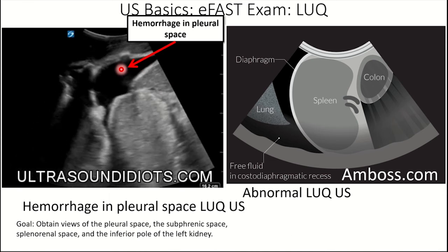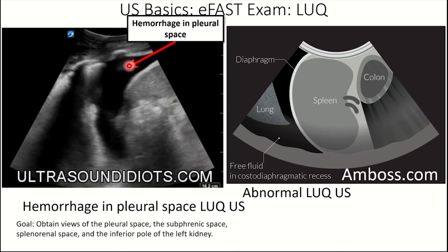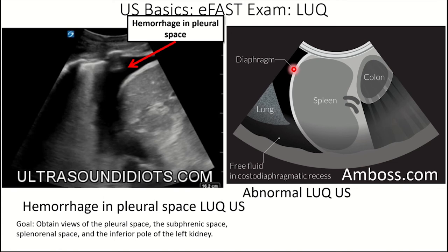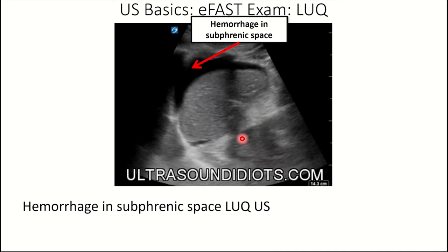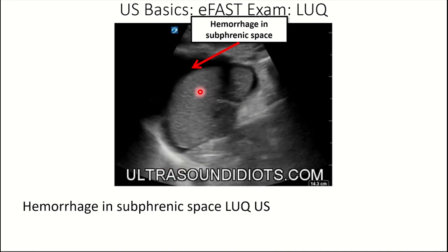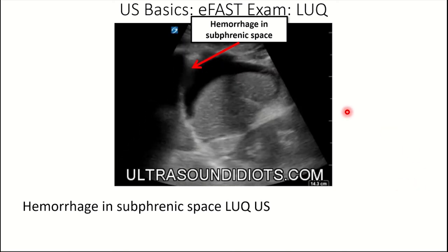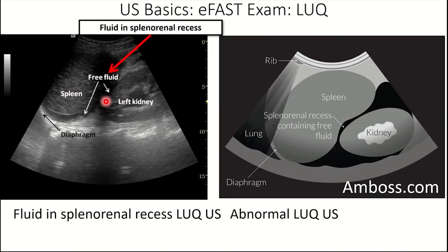Here's hemorrhage in the pleural space on the left side — the lung is waving, we see the diaphragmatic stripe, the spleen, and anechoic fluid most likely representing hemorrhage in a trauma patient. Here is hemorrhage in the subphrenic space — the diaphragmatic stripe is disconnected from the spleen with black anechoic fluid in between. And here is free fluid in the splenorenal space — you can see the kidney, spleen, nice diaphragm, and free fluid.